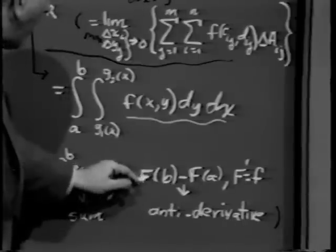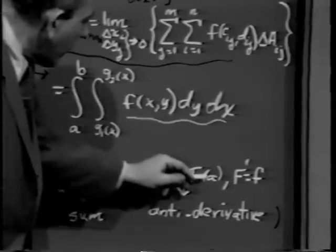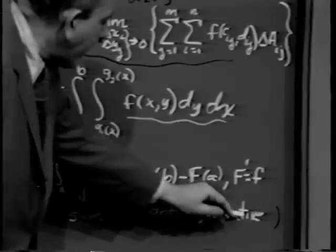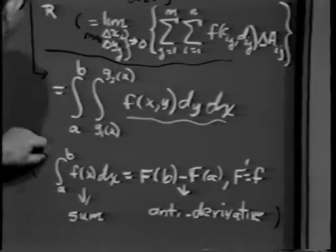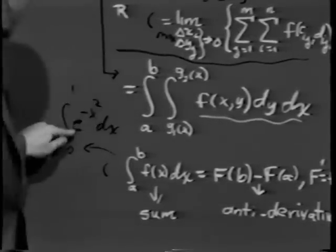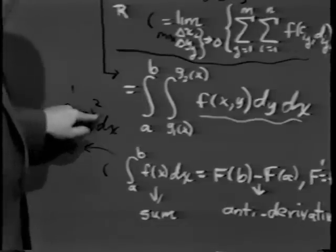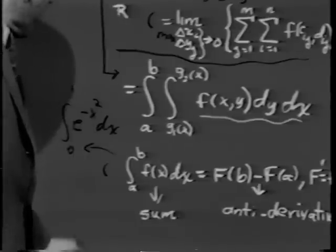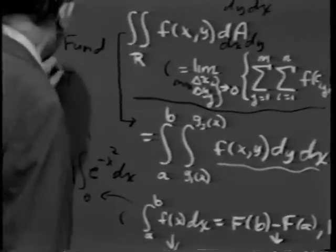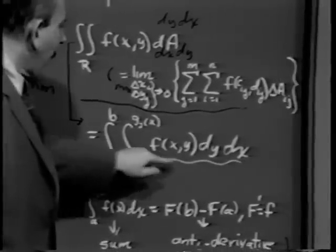The idea being that if you knew a function whose derivative was f, that gave you an easy way to evaluate the sum. On the other hand, if you didn't know a function whose derivative was f, evaluating the sum as a limit gave you a way of being able to find the antiderivative. A particular case in point was trying to handle e^(−x²) dx as x goes from 0 to 1. This certainly existed as an area, but there is no elementary function — we invented one called the error function — whose derivative is e^(−x²).